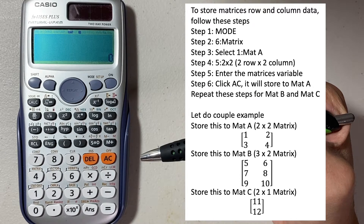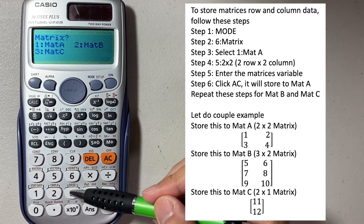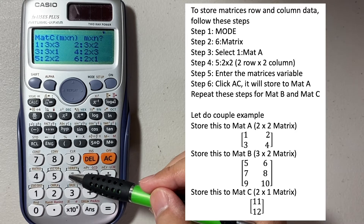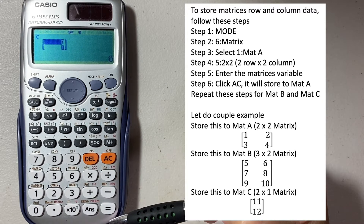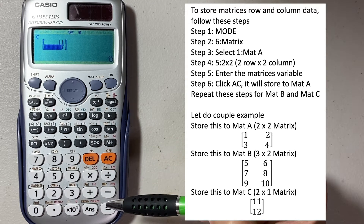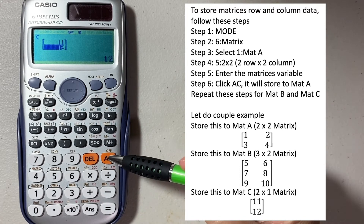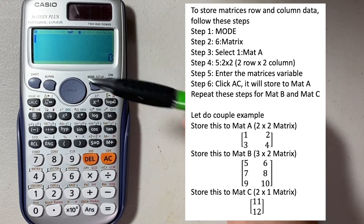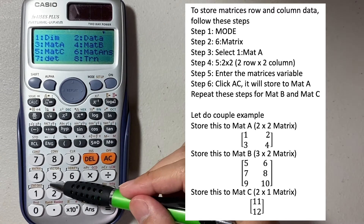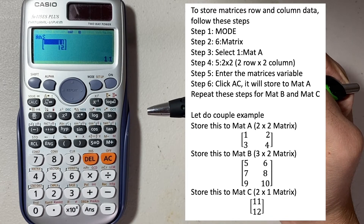Let's store another one in matrix C. Go to mode, number 6, which is matrix, and select number 3 which is matrix C. We're going to select a 2x1 — number 6. Here we're going to enter 11 and 12. Make sure you click AC to store it. Then go to shift, 4, and then go to matrix C, number 5. Here you go — you have a 2x1 matrix.